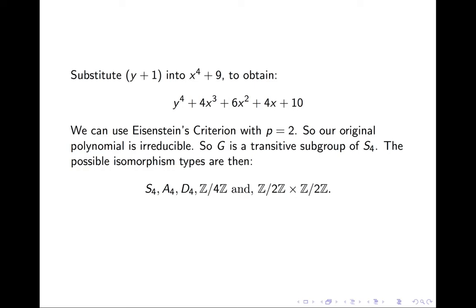So G must be a transitive subgroup of S_4. The possible isomorphism types are then the symmetric group on 4 letters, the alternating group, the dihedral group, cyclic group, or the Klein group.